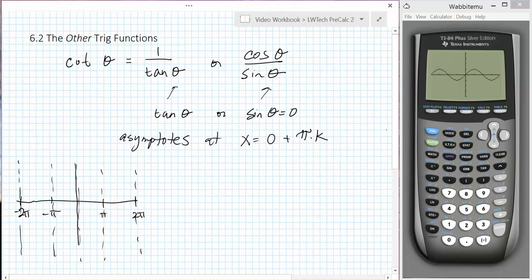What other properties do we know? Well, the cotangent, like the tangent, is positive in the first and third quadrants, and negative in the second and fourth quadrants.